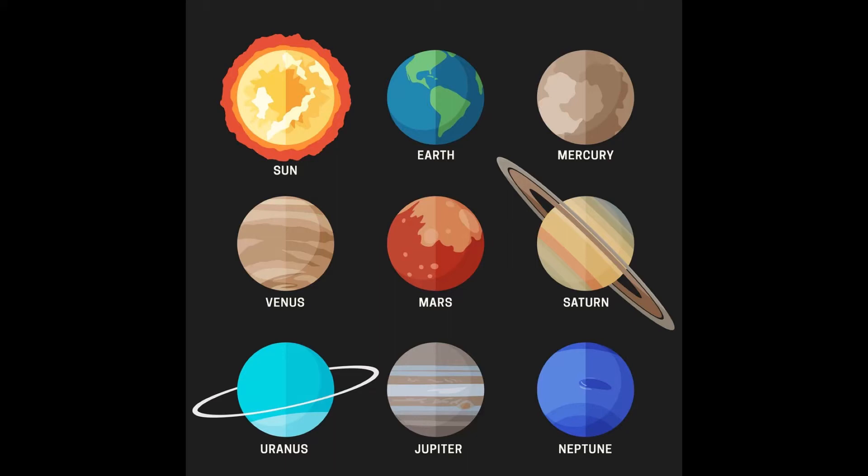Saturn, Uranus, and Neptune are very big, but Jupiter is the biggest planet of all.